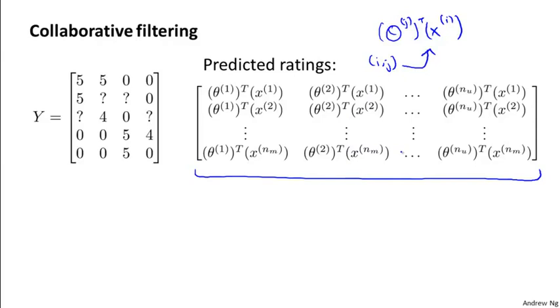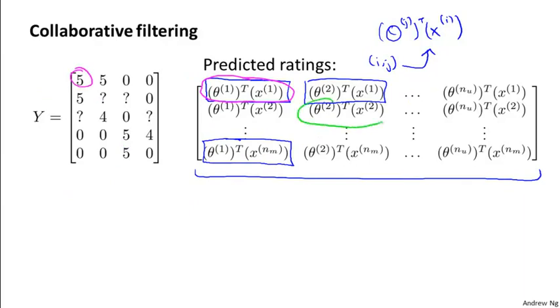And so this is a matrix where this first element, the 1-1 element, is the predicted rating of user 1 on movie 1. And this element, the 1-2 element, is the predicted rating of user 2 on movie 1, and so on. And this rating is what we would have predicted for this value, and this rating is what we would have predicted for that value, and so on.